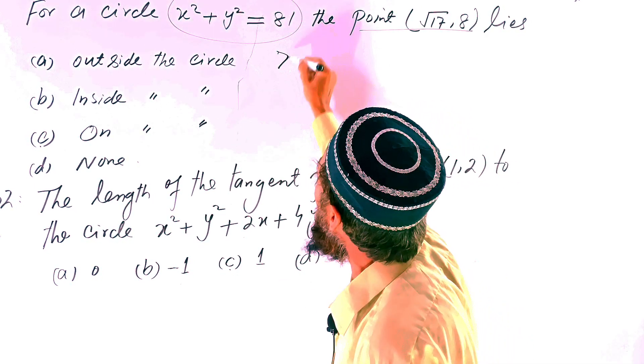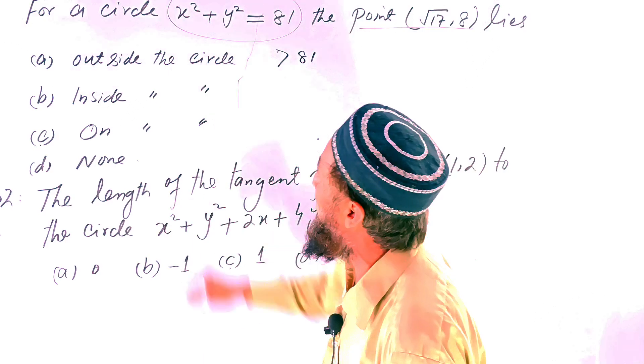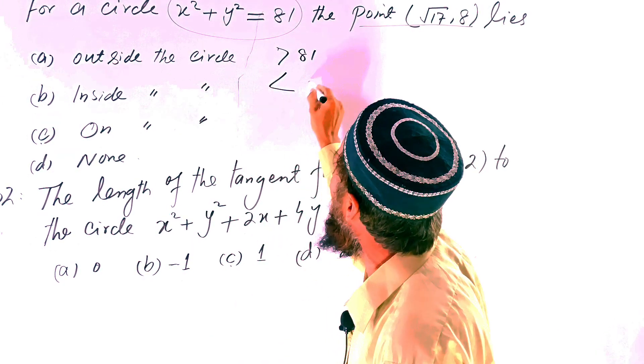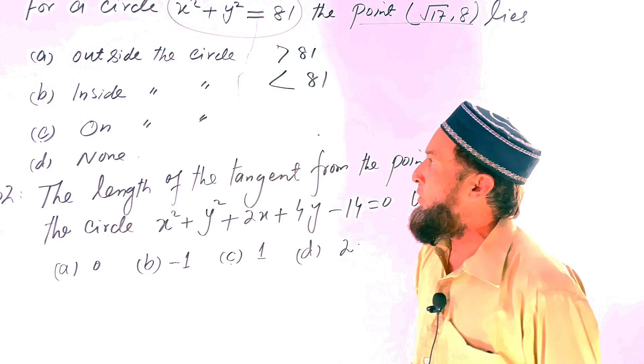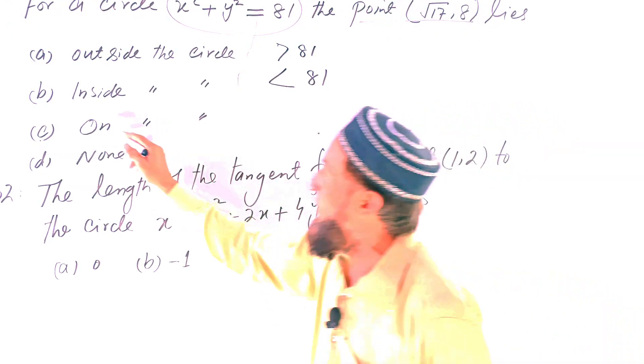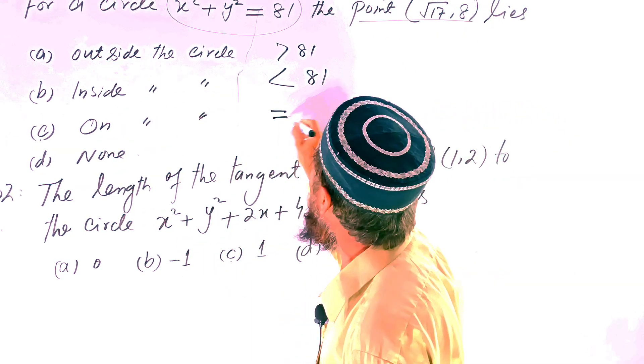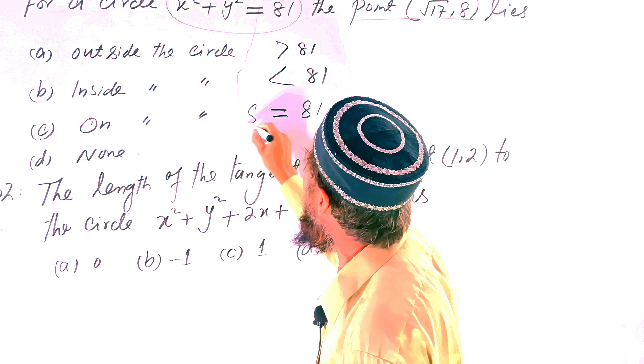This will be equal to inside circle if on the circle, so that will be equal to 81. It means that 81 we will get here from the answer. We will check if the point lies on the given circle.